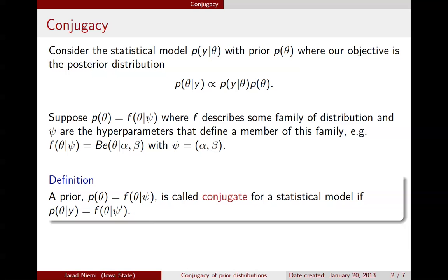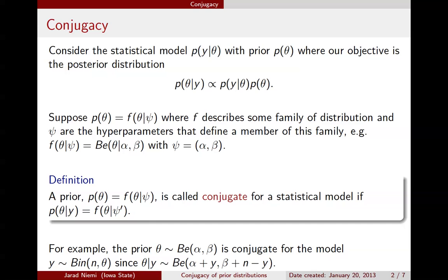The family is the same — that is, f hasn't changed — but the hyperparameters have gone from psi to psi prime. We've already seen one example of this: if you have a binomial model with unknown success probability and you put a beta prior on that success probability, the posterior is also a beta distribution whose hyperparameters have been updated.